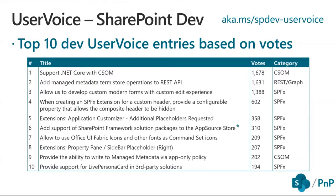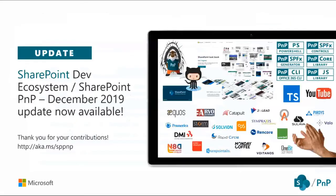On the user voice side, support for .NET Core is still the number one request and we are actively working on it — it's a sad story and we understand people have been frustrated. The same applies for management of the term store through REST APIs, which should be available as a preview in the beta endpoint relatively soon. The December 2019 update blog post is now available on the SharePoint dev blog, calling out all contributors and changes from the past month.